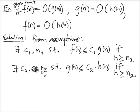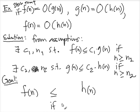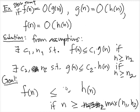So now what we want, our goal is to show that f(n) is less than something times h(n) if n is larger than something. We know that this is true if n is larger than n₁, and this is true if n is larger than n₂. If we use the fact that both of them are positive numbers, then if n is larger than the sum, or maybe you can even use the max of n₁, n₂, then both of these hold, and then you know that f(n) is less than c₁·g(n), and g(n) is less than c₂·h(n), so you know this.